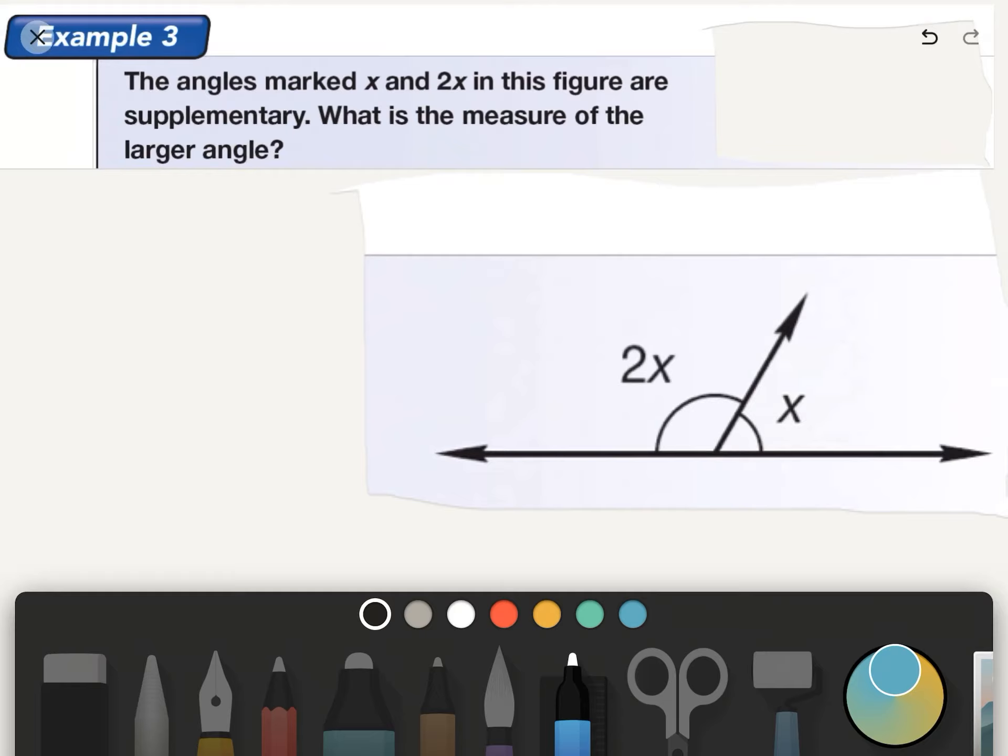Example 3. The angles marked x and 2x are supplementary, which means the entire thing adds up to 180 degrees. So the question here is, what is the measure of the larger angle? To set up an equation here, we could say 2x plus x equals 180 degrees. And so, solving this - we start out with this, which is the equation.